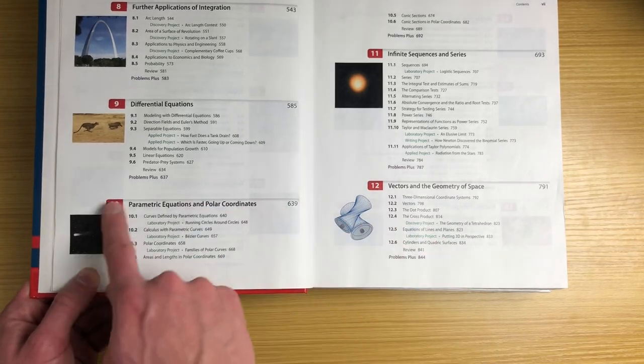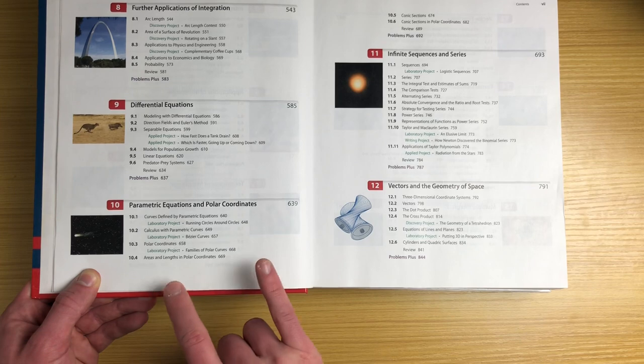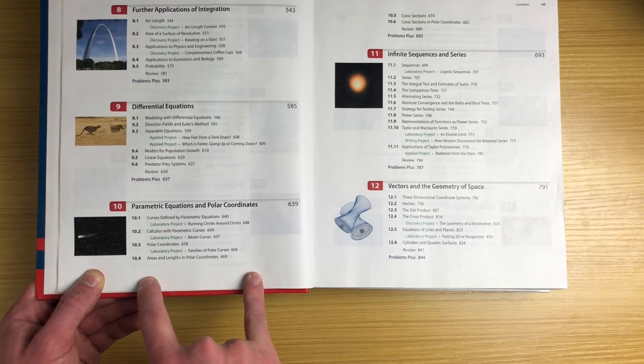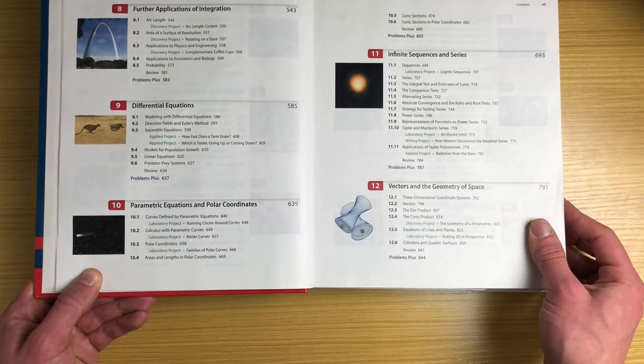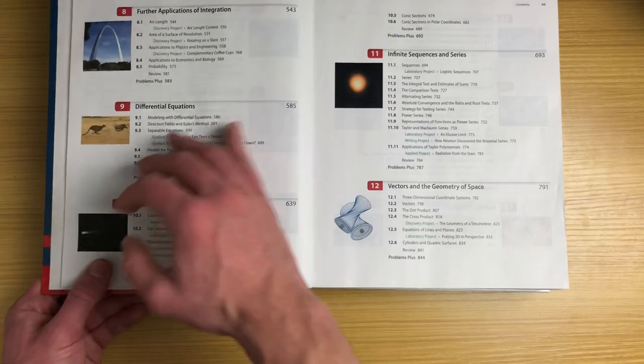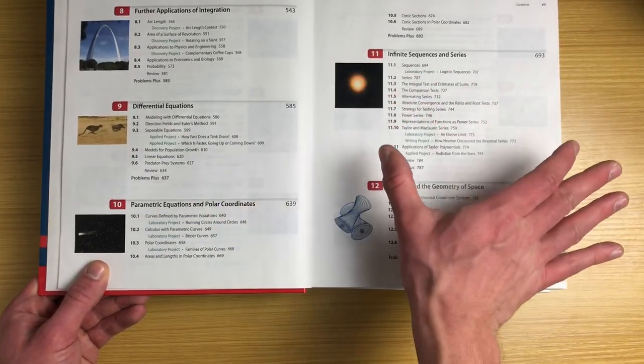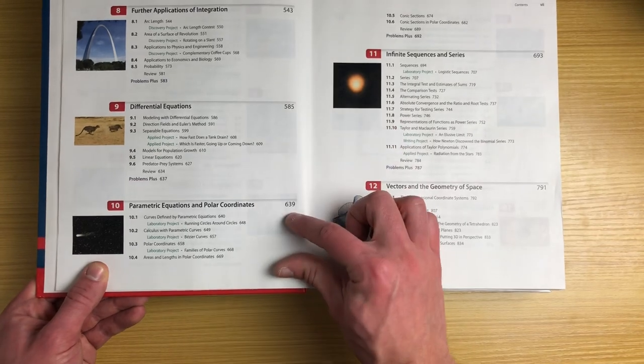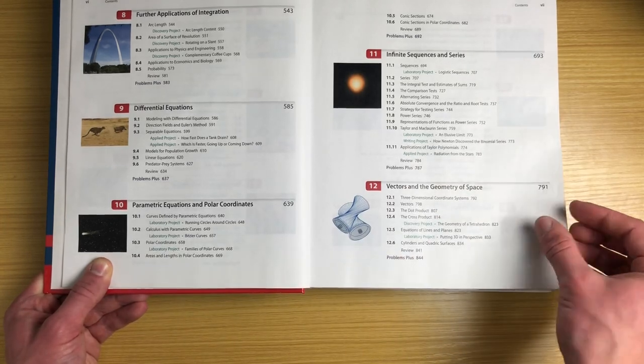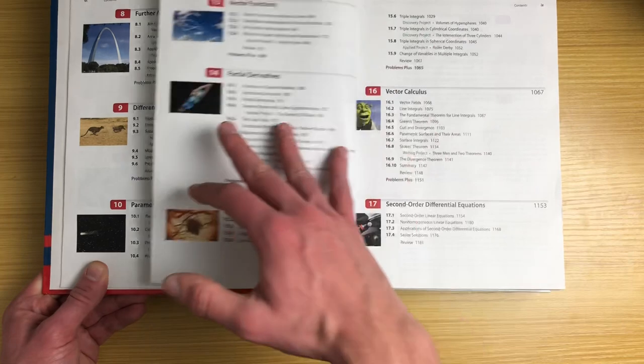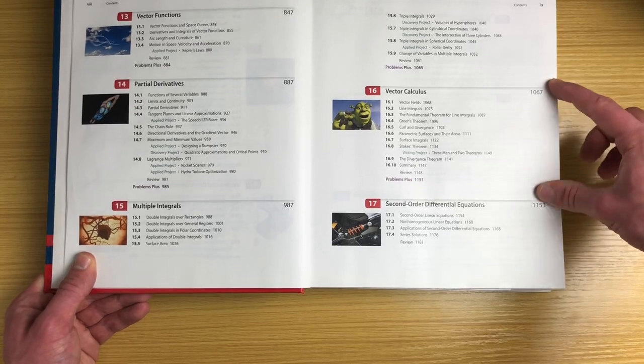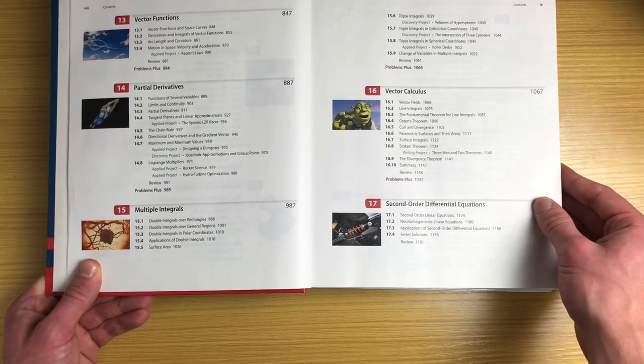Parametric and polar, this is kind of the odd section for calc two. You usually learn this and don't really use it again maybe till calc three. If I was structuring this book, I would go integrals, then applications of integrals, then sequences and series, differential equations, and then parametric and polar. Because once you do parametric and polar, then you start moving into the 3D stuff, the world of calc three - vectors, more geometrical things, then partial derivatives and multiple integrals and vector calc. That's all the nature of calc three, three-dimensional stuff.